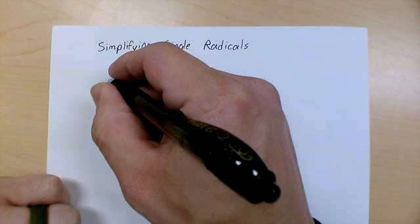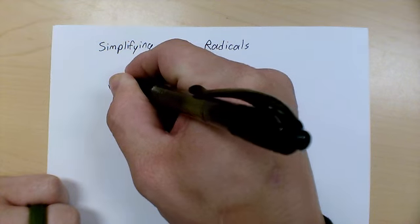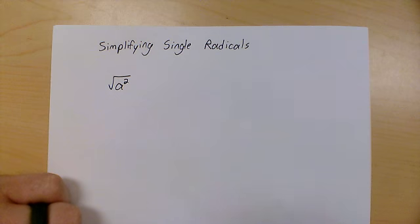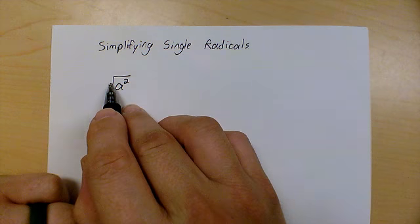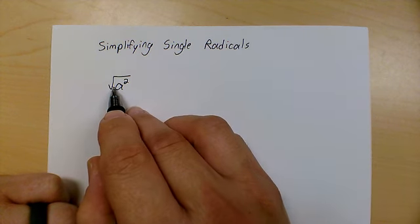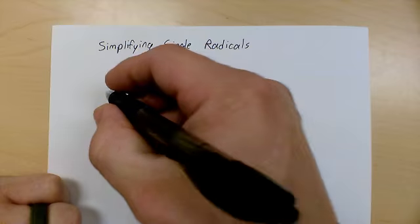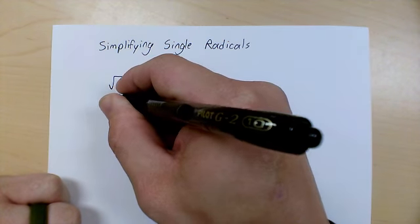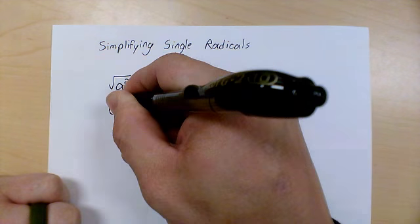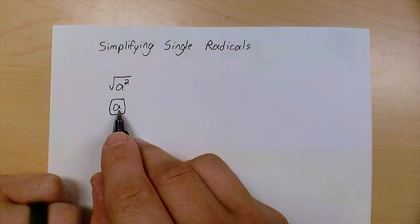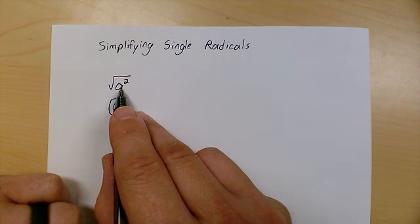Simply put, a radical is the inverse operation to an exponent. So when you see this symbol, it means square root. So the square root of something like a squared would simply be the value a. Now this is making the assumption that a is a positive value to begin with.